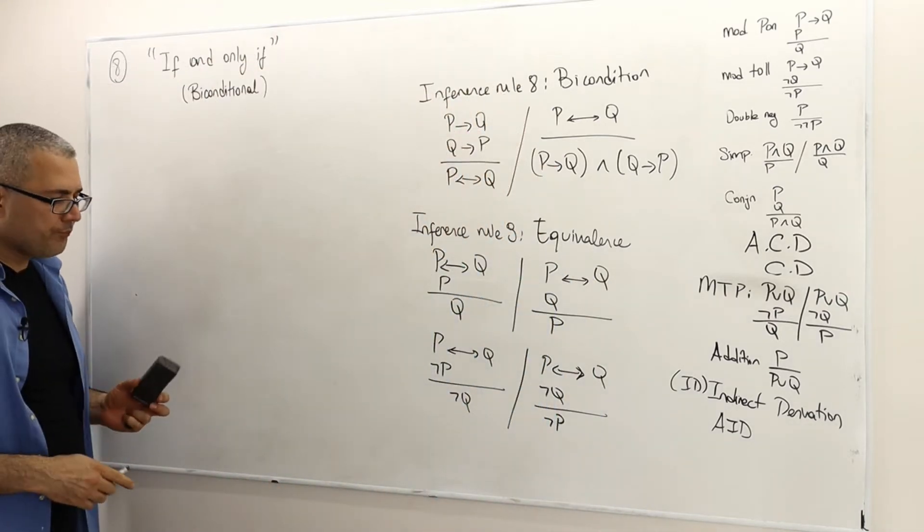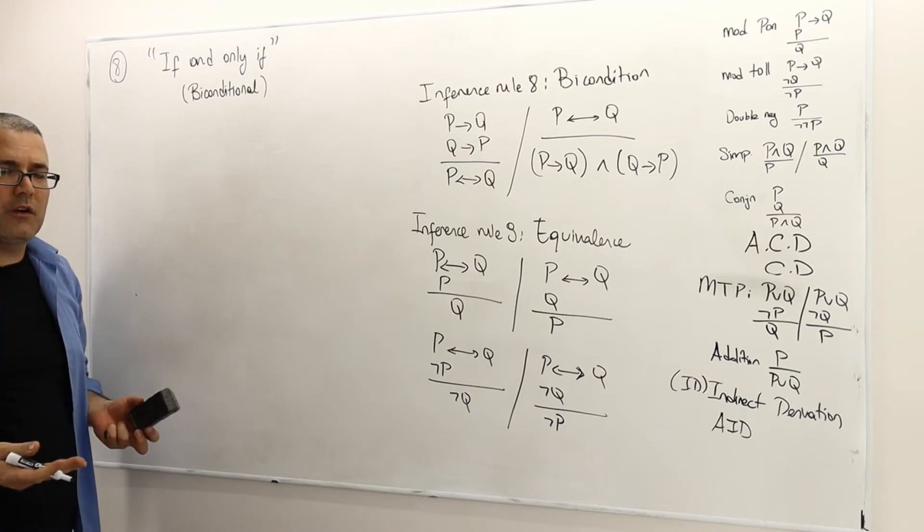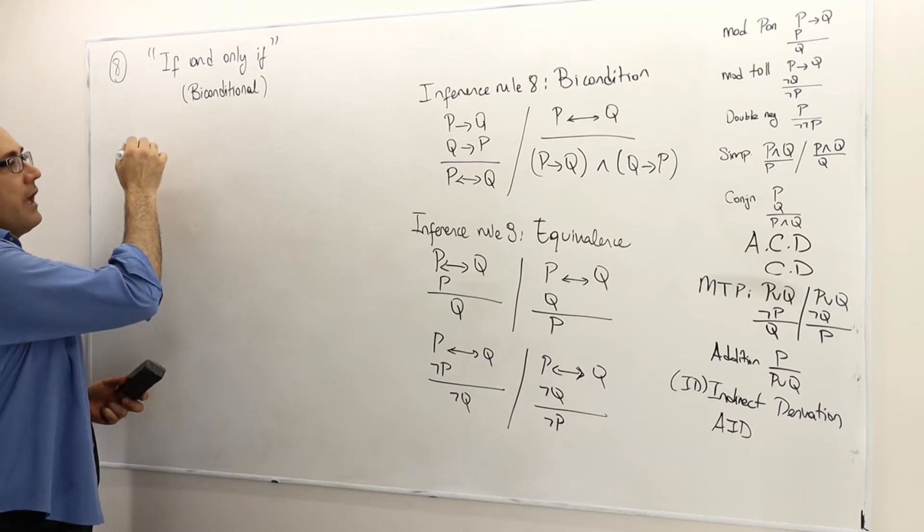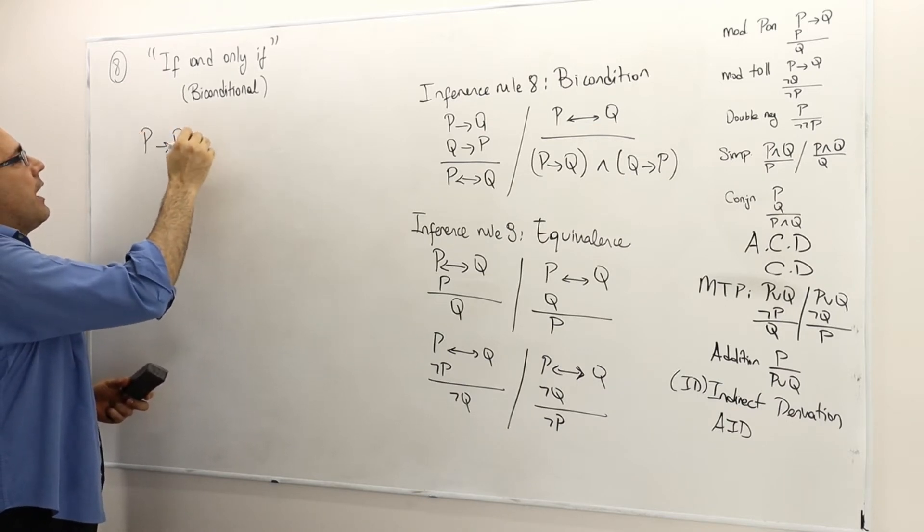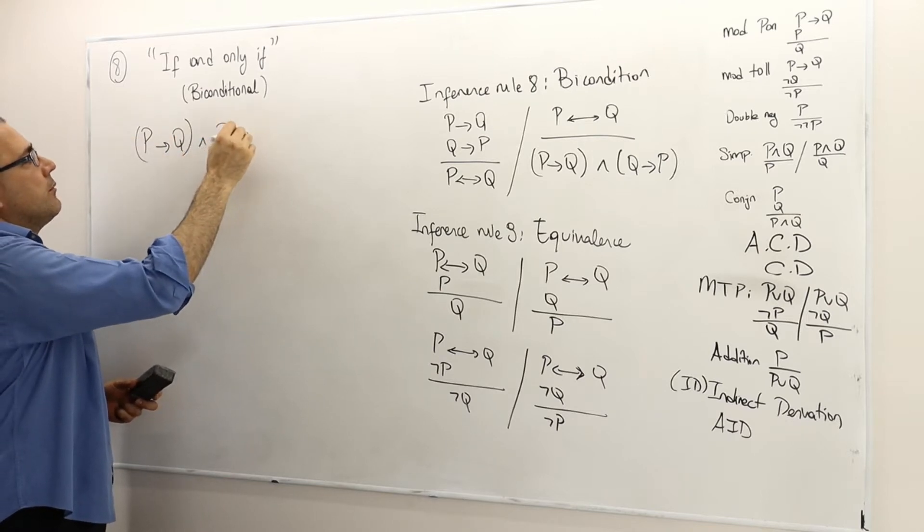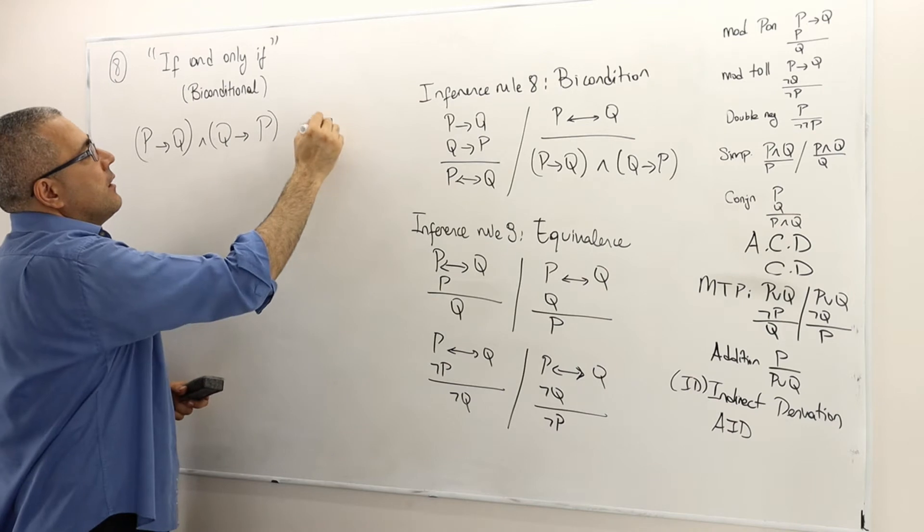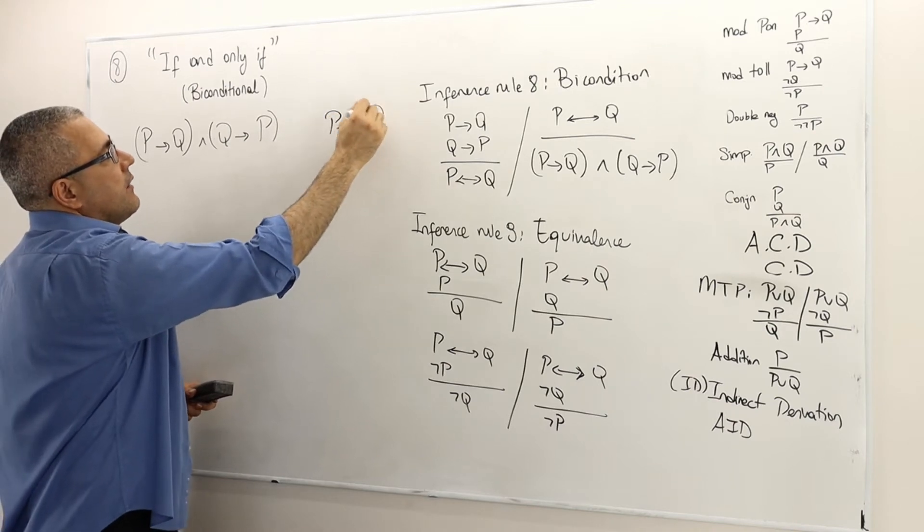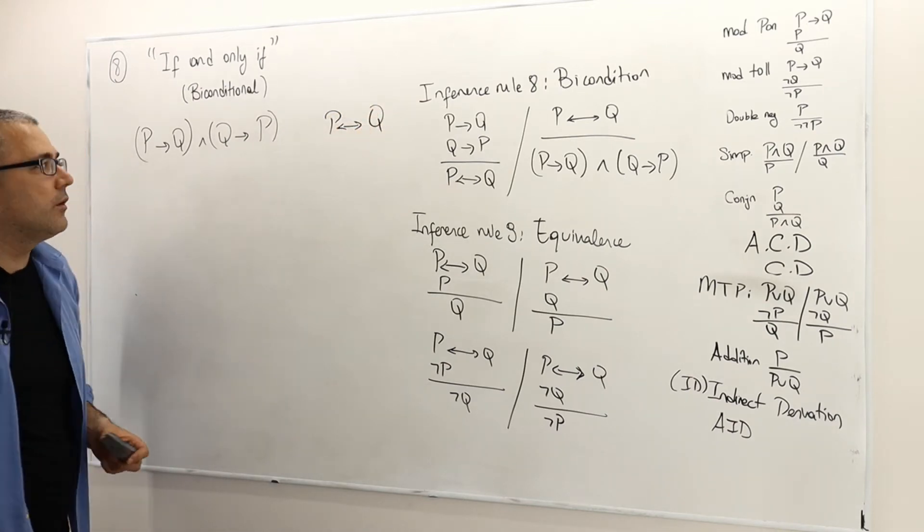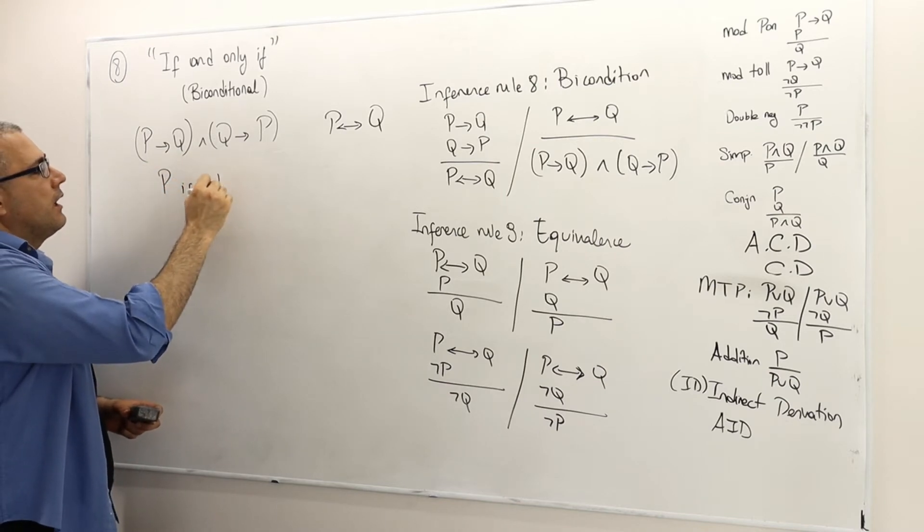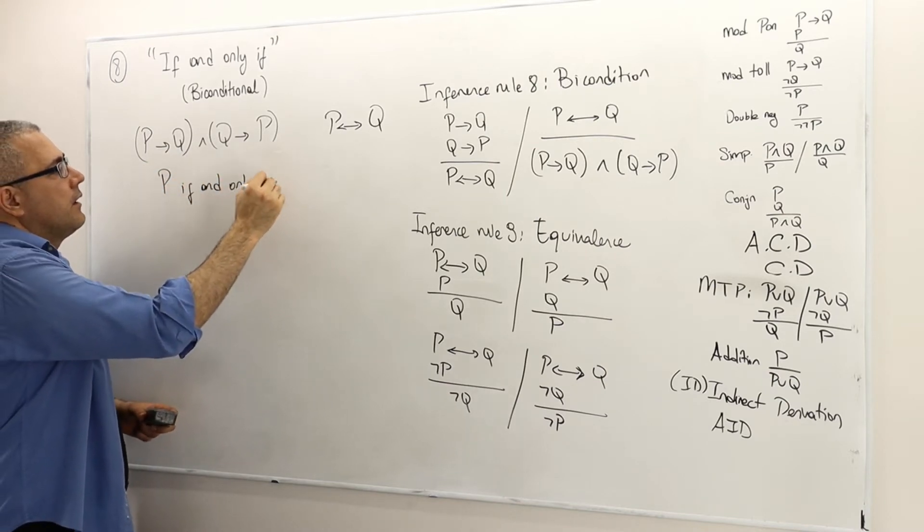So the definition of if and only if statement is actually simple. Whenever I have p implies q and q implies p, then instead of writing this, I say p if and only if q.